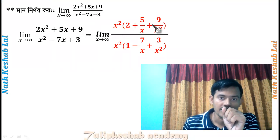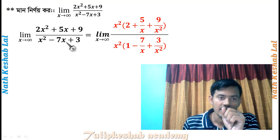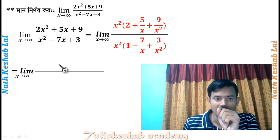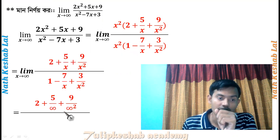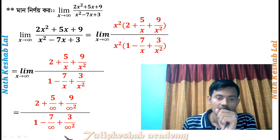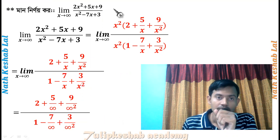Dividing numerator and denominator by x squared, we get: (2 plus 5/x plus 9/x²) divided by (1 minus 7/x plus 3/x²). Now substituting x tends to infinity: 5 by infinity is zero, 9 by infinity squared is zero, 7 by infinity is zero, 3 by infinity squared is zero.